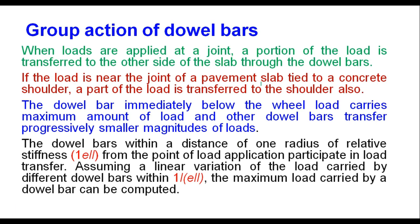An important consideration in the design of dowel bars is group action. When loads are applied at a joint, a portion of the load is transferred to the other side through dowel bars. If the load is near the joint of a pavement tied to a concrete shoulder, part of the load is transferred to the shoulder also. The dowel bar immediately below the wheel load carries the maximum load, and other dowel bars transfer progressively smaller loads. The dowel bars within a distance of one radius of relative stiffness (1L) from the point of load application participate in load transfer. Assuming a linear variation of load, the maximum load carried by a single dowel bar can be computed.